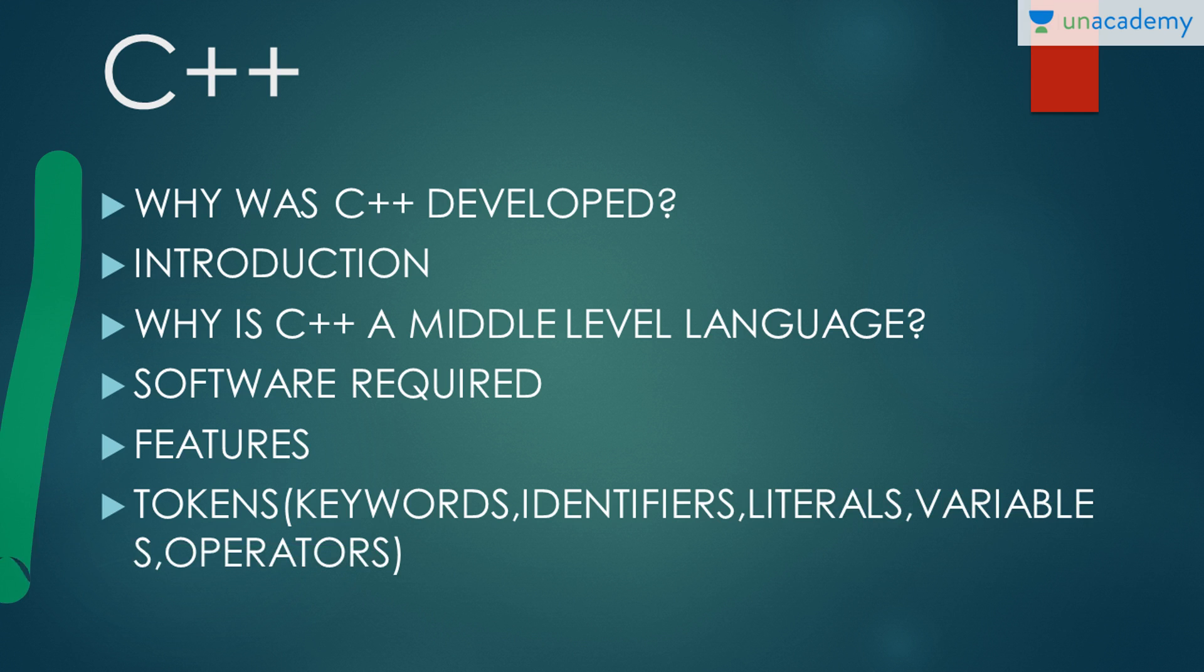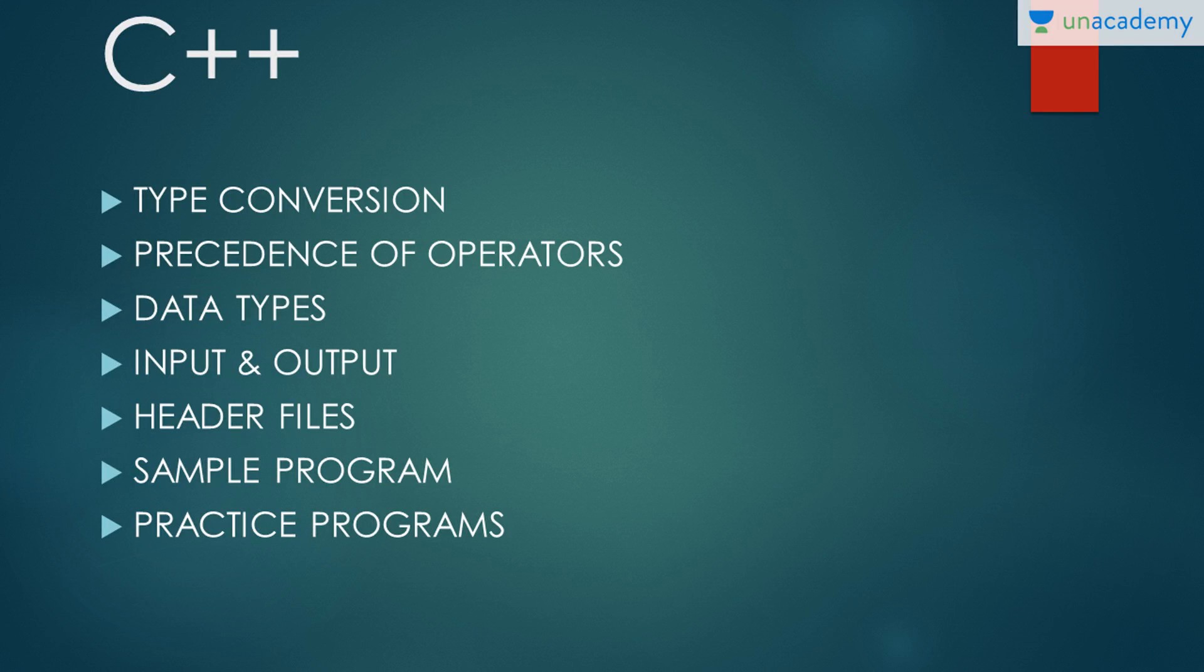Then we'll move our train towards type conversion - how one data type converts to another data type in C++. Then precedence of operators - operators' precedence, associativity, ranking, priority, on what basis they work. Then data types - which data types are available in C++. Then input or output - how we give it using cin and cout. Then header files - header files are collection of library functions. After that we have a sample program and some practice programs for you.